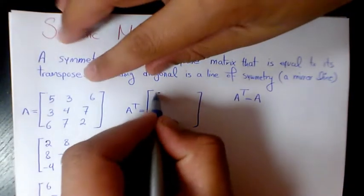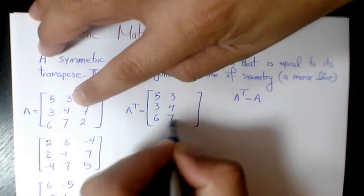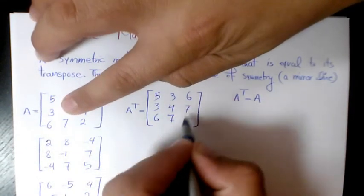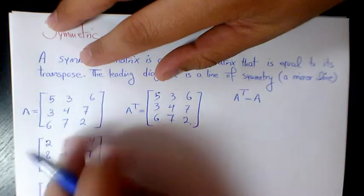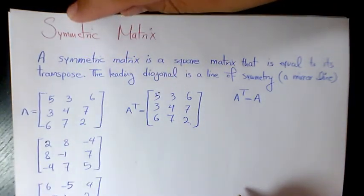It's going to be 5, 3, and 6; 3, 4, 7; 6, 7, 2. Now if we compare it, we have exactly the same thing, so it means that we are dealing with a symmetric matrix. It has to be, for sure, it has to be a square matrix.